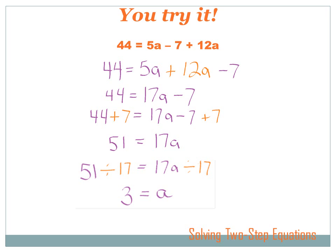So, on the right side of the equation, I've got 17a divided by 17, which equals just a. And on the left side, I've got 51 divided by 17, which equals 3.